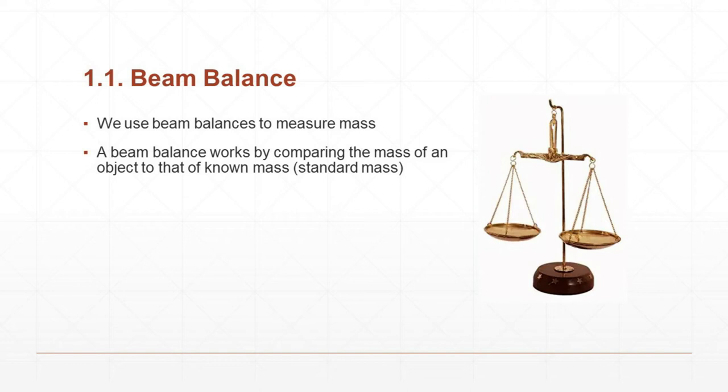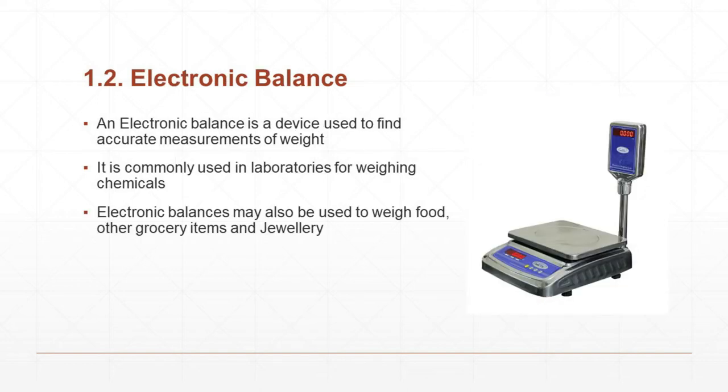The next one, electronic balance. An electronic balance is a device used to find accurate measurements of weight. Accurate means correct. It is used very commonly in laboratories for weighing chemicals to ensure a precise measurement of those chemicals for use in various experiments. Electronic balances may also be used to weigh food, other grocery items as well as jewelry.